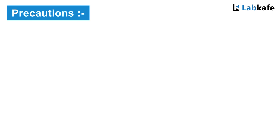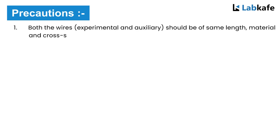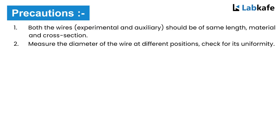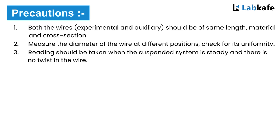Precautions. Both the wires, experimental and auxiliary, should be of same length, material, and cross-section. Measure the diameter of the wire at different positions, check for its uniformity. Reading should be taken when the suspended system is steady and there is no twist in the wire.